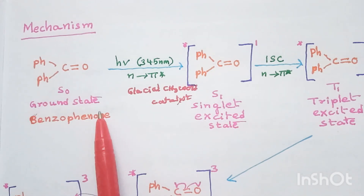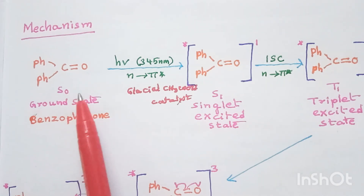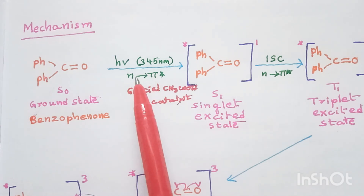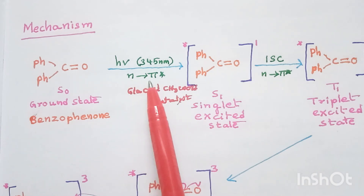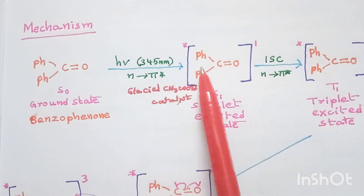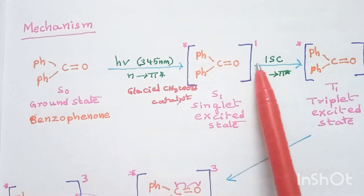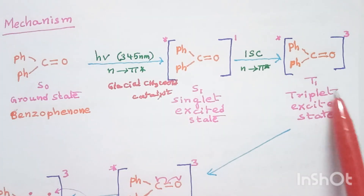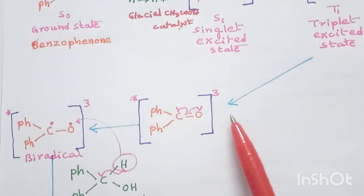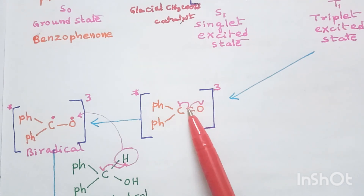Now let's see the mechanism. Benzophenone — Ph-Ph-C=O — is present in ground state S0. It is irradiated by UV light of 345 nanometers in presence of glacial acetic acid catalyst and undergoes n to π* excitation, entering singlet excited state S1. From S1, through intersystem crossing it enters triplet excited state T1.